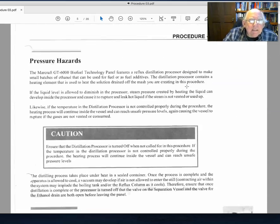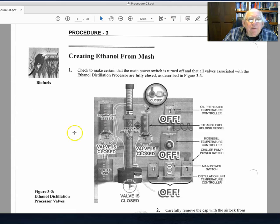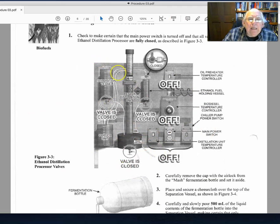In essence, what this lab consists of is going down and just very carefully putting in the material, the mash, allowing the mash then to go into the boiler. Allow the electronics to cause the boiler to come up in temperature, and the distillation column then allows the ethanol to finally condense and be collected in a holding vessel for later measurements.